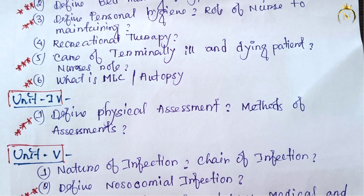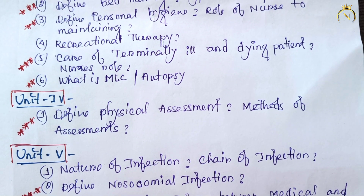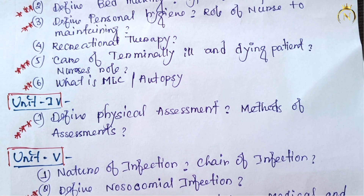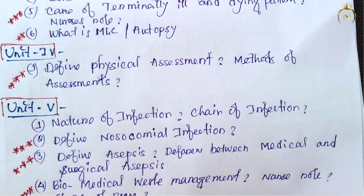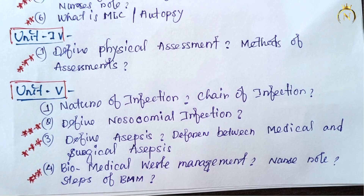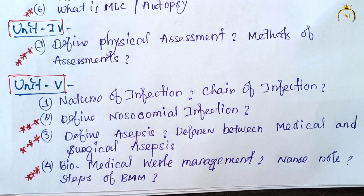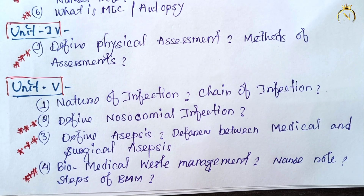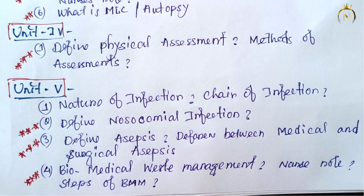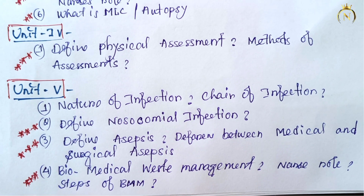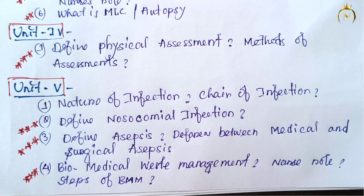Recreational therapy is sometimes asked but not that much important. I have given each and every question unit-wise, following which 100% common questions will come. Care of the dying patient is important, MLC also most important. Next, define physical assessment and methods of physical assessment — the four-step assessment method is most important from Unit 4.